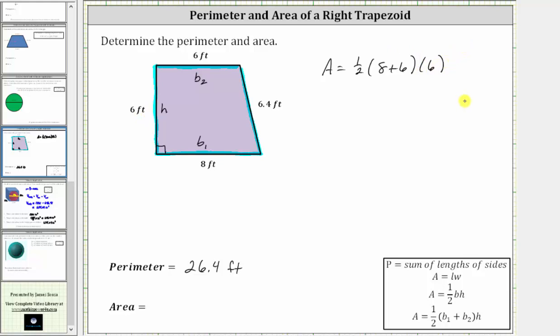And now following the order of operations, we simplify inside the parentheses first. 8 plus 6 is 14. The area is equal to one-half times 14 times 6. Multiplying from left to right, one-half times 14 is 7, and 7 times 6 is 42.